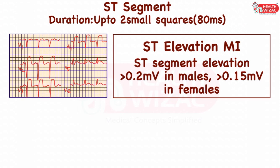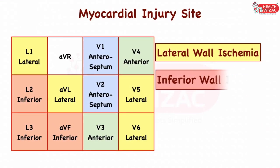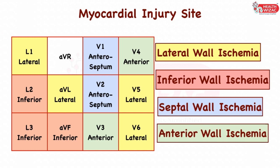ST segment represents the time interval between ventricular contraction and relaxation and has a duration of approximately 80 milliseconds. ST segment elevation or depression of more than 0.2 millivolts in males and more than 0.15 millivolts in females is significant, labeled as ST elevation or non-ST elevation MI. Changes in leads 1, AVL, V5, and V6 indicate lateral wall ischemia; V1 and V2 indicate septal wall MI; V3 and V4 indicate anterior wall MI; leads 2, 3, and AVF indicate inferior wall MI.